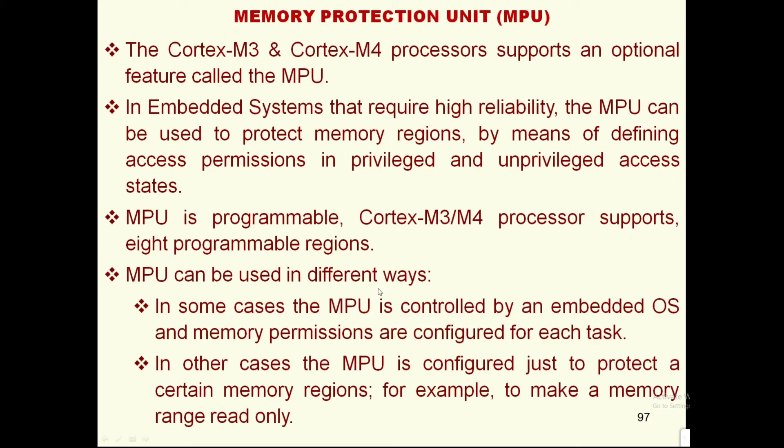In this presentation, we are going to discuss the memory protection unit, which is a special feature in the ARM Cortex-M4 processor architecture. Cortex-M4 processor supports an optional feature called the memory protection unit, MPU. In embedded systems that require high reliability, the memory protection unit can be used to protect memory regions by defining access permissions in privileged and unprivileged access states. The memory protection unit is programmable.